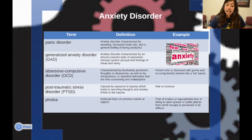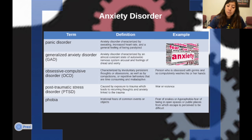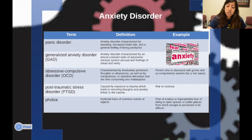Now we're going to look at anxiety disorders. A panic disorder is characterized by sweating, increased heart rate, and a general feeling of being paralyzed. Generalized anxiety disorder, or GAD, is characterized by an almost constant state of autonomic nervous system arousal and a feeling of dread and worry. Obsessive compulsive disorder, OCD, is characterized by involuntary persistent thoughts or obsessions, as well as compulsions — repetitive behaviors that are very time-consuming and maladaptive.